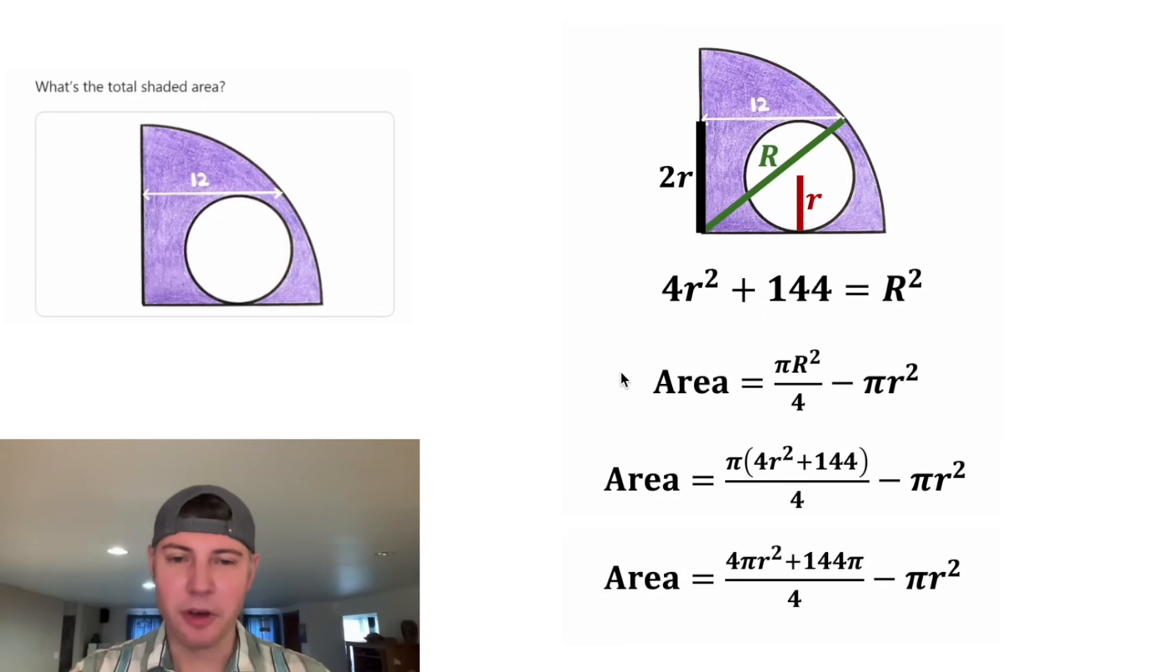This π can distribute to both of those and let's split it into two separate fractions. This 4 and this 4 will cancel each other out. And 144 divided by 4 is 36. We can rearrange things a little bit. And this comes out really nice. π r² minus π r² is zero.